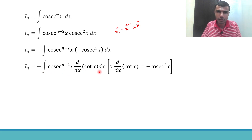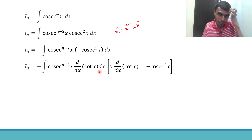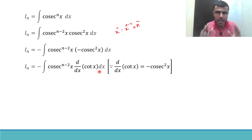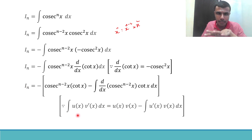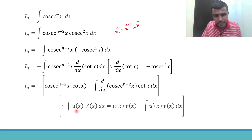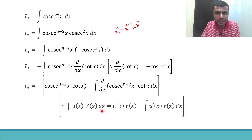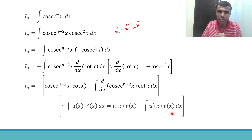Now the integrand is of the form: a function times the derivative of another function. For this I can apply integration by parts. The formula states: the integral of u(x) times v'(x) dx equals u(x)·v(x) minus the integral of u'(x)·v(x) dx. Don't be afraid — I'll make it as easy as possible.